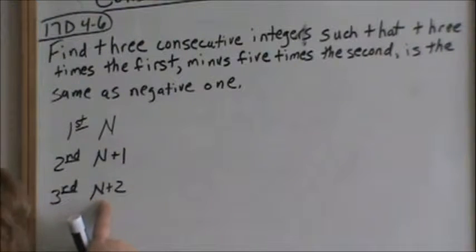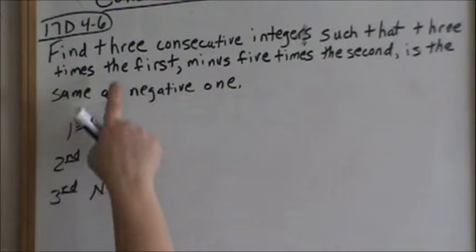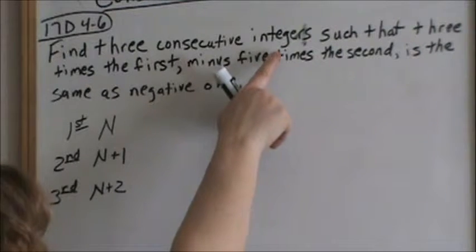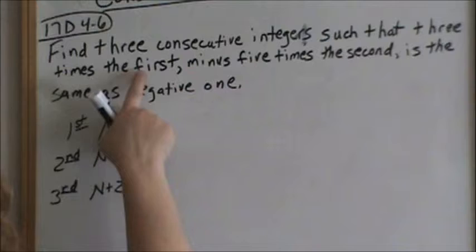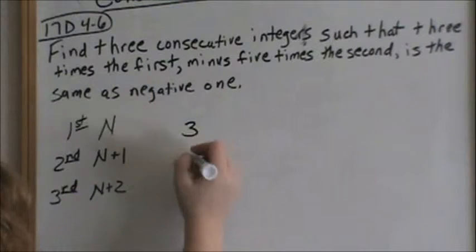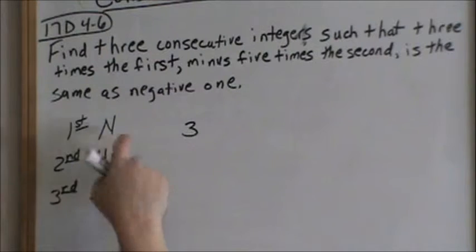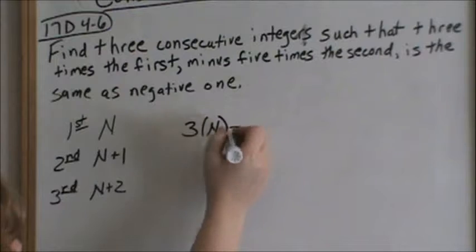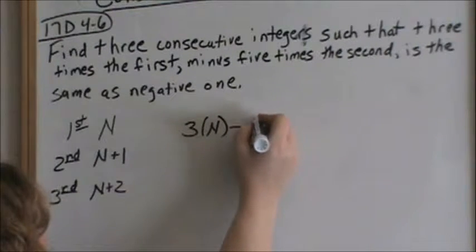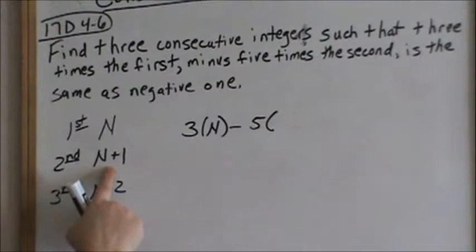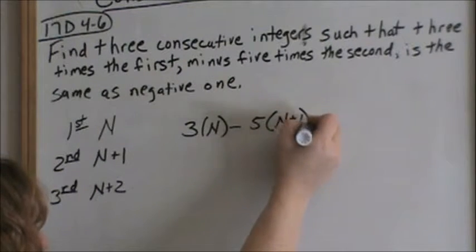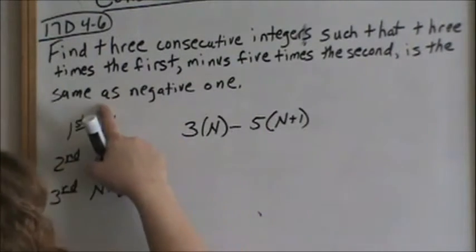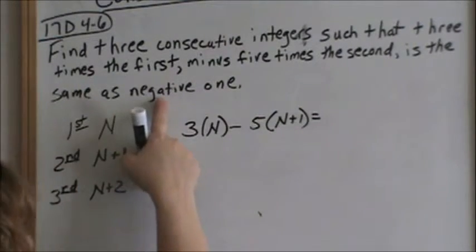Now I can go back to my word problem to set up an equation. The problem says find three consecutive integers — they're going to be n, n plus one, and n plus two — such that three times the first integer, which is n, minus five times the second integer, which is n plus one — the parentheses around n plus one are very important — is the same as, that means equal, negative one.